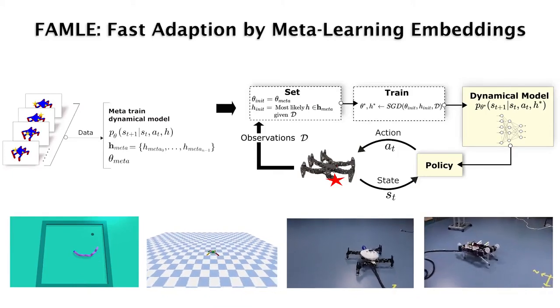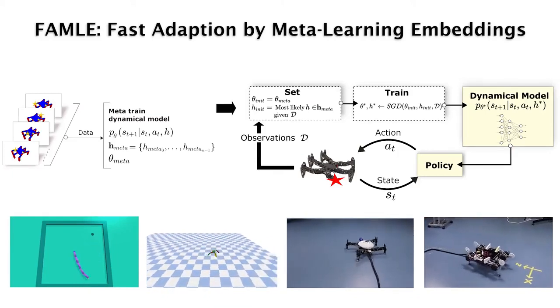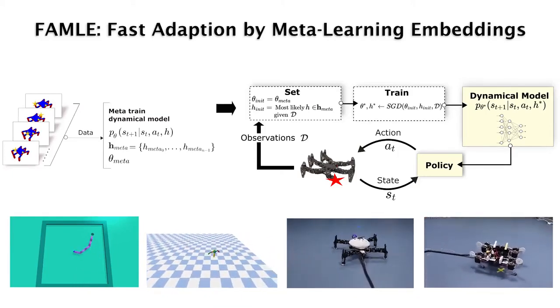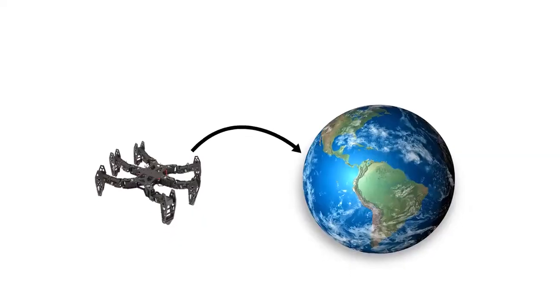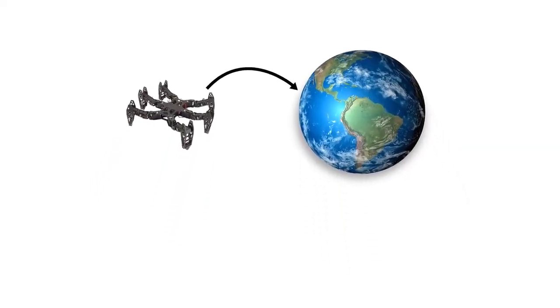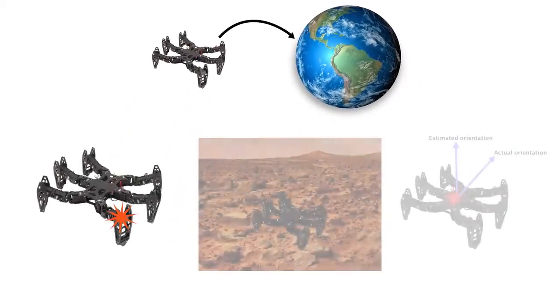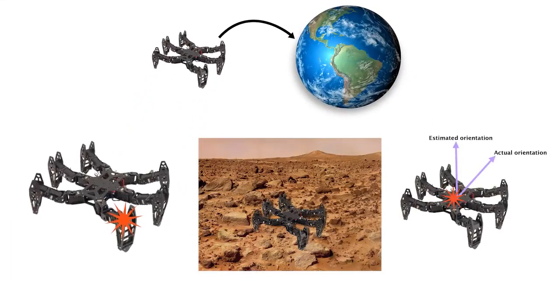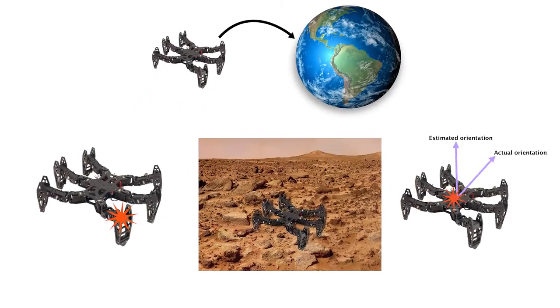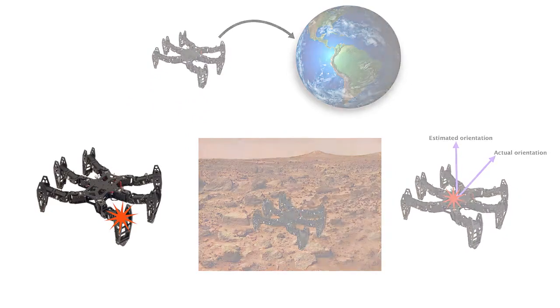We propose an algorithm called FAMIL that incorporates multiple priors from simulation for data-efficient online learning in robotics. In the real world, a robot might face infinitely many situations that we cannot predict beforehand, for example, weakened or damaged motors, unknown terrain conditions, faults on its sensors, and so on.